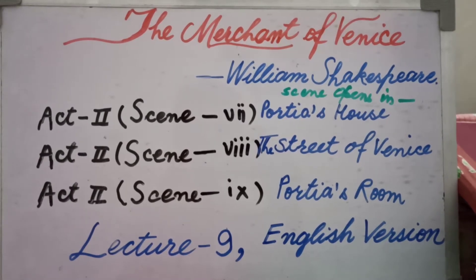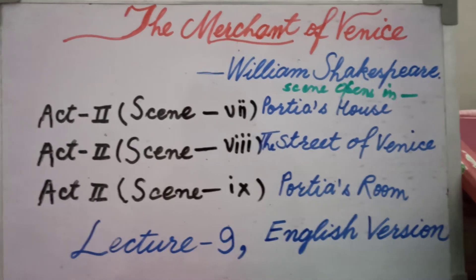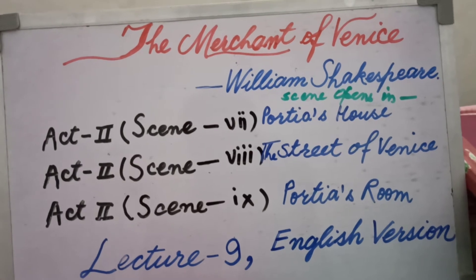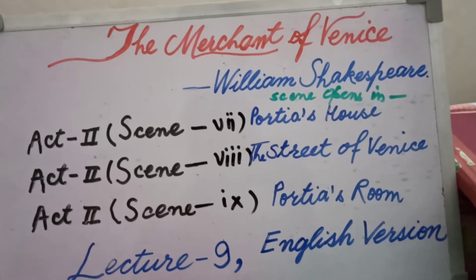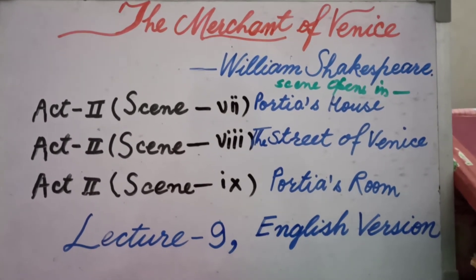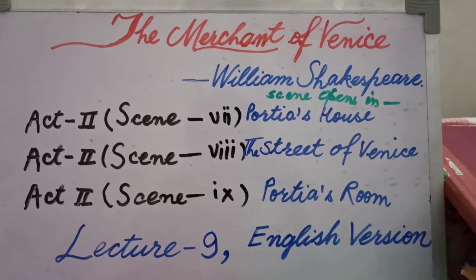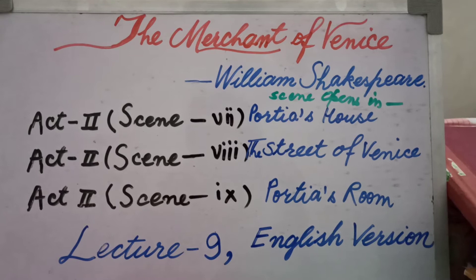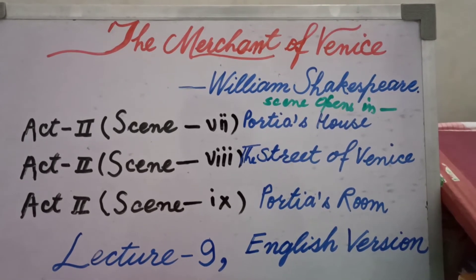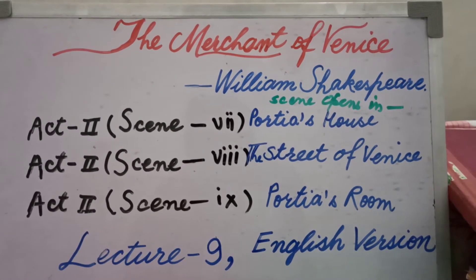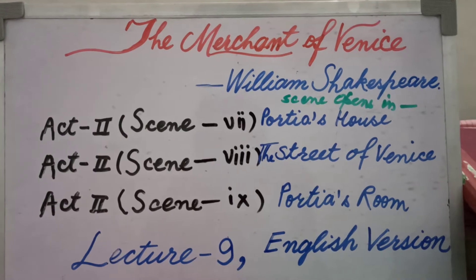It is very important to know what characters are in this scene and where it takes place. This scene takes place in a room in Portia's house. Portia enters with the Prince of Morocco. The curtain over the caskets is withdrawn and the Prince sees the three caskets. The casket of gold bears the inscription: 'Who chooses me shall gain what many men desire.' The inscription on the silver casket reads: 'Who chooses me shall get as much as he deserves.'